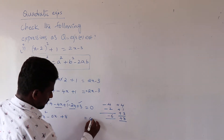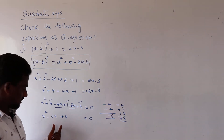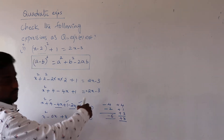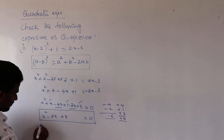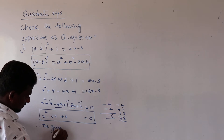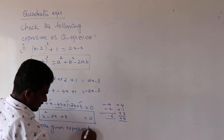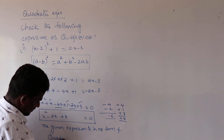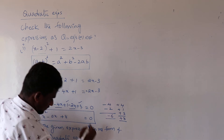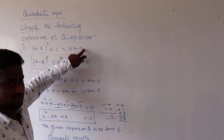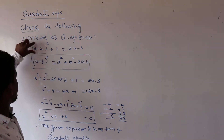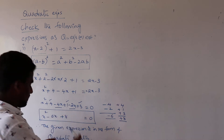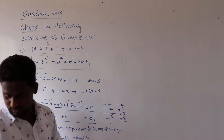So we get x square minus 6x plus 8 equal to 0. This is in the form ax square plus bx plus c equal to 0, so it is absolutely in quadratic form. Therefore, the given expression is in the form of a quadratic equation. We used the (a minus b) whole square identity, expanded, and simplified to verify.